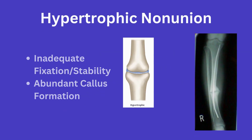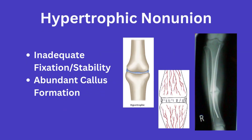First up we have the hypertrophic non-union. This will occur when there is inadequate stability or fixation. Hypertrophic non-unions have good blood supply and thus nourishment, however fail due to too much movement at the fracture site, which doesn't allow for proper healing. Since these do have adequate nourishment, you will see substantial callus formation, which you can appreciate here in this x-ray. These are corrected with proper fixation, whether a revision procedure or initial operative approach.